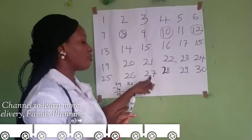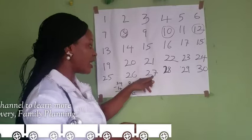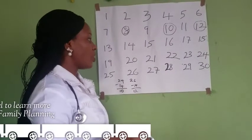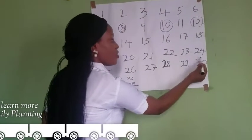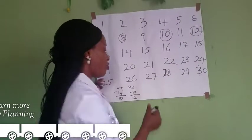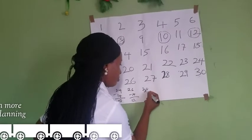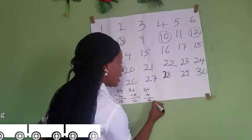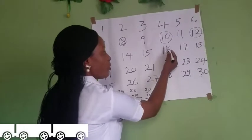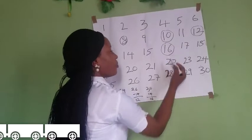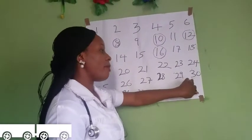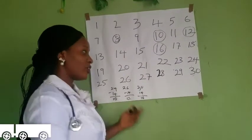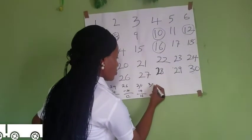If you have a 27-day menstrual cycle, also subtract 14 from it to get your ovulation day. If you have a 30-day menstrual cycle, when you subtract 14 from 30, you find that your ovulation is on day 16. That means day 16 will be the ovulation day for a lady with a 30-day menstrual cycle.